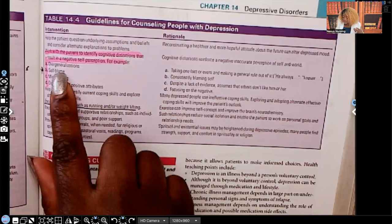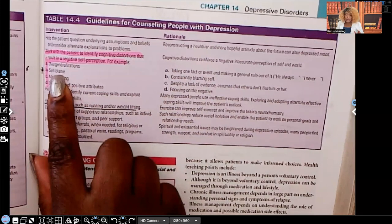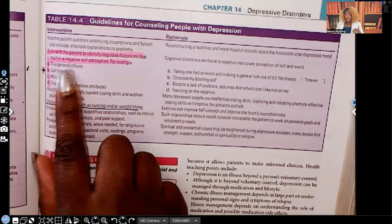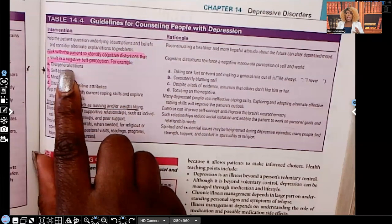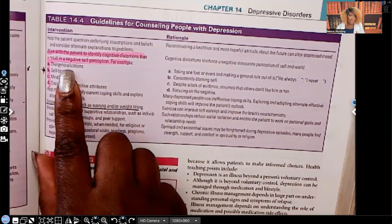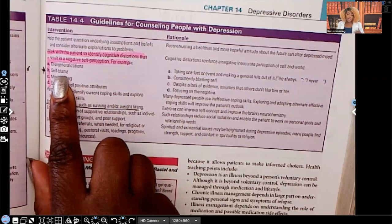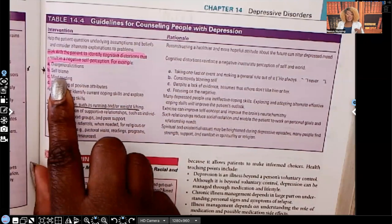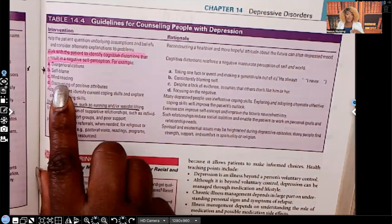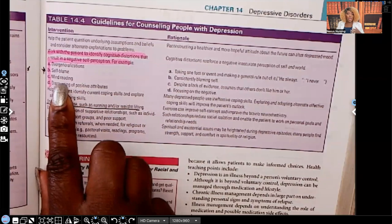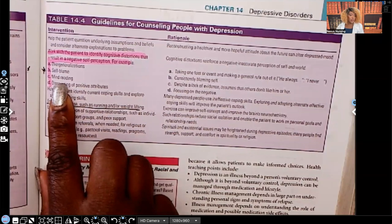Examples of cognitive distortions include over-generalizations: the patient does one thing wrong and says, 'I can't do anything right.' Self-blaming — I put a star next to this because it pops up most on nursing test questions — they blame themselves for everything that goes wrong, even things out of their control. You want to help them explore how something truly outside their control is not their fault.